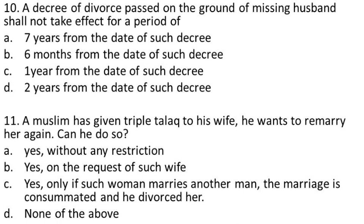Question 11: A Muslim has given triple Talak to his wife and wants to remarry her. Can he do so? (A) Yes, without any restriction, (B) yes, on the request of such wife, (C) yes, only if such woman marries another man, the marriage is consummated, and he divorces her, (D) none of the above. The answer is C.